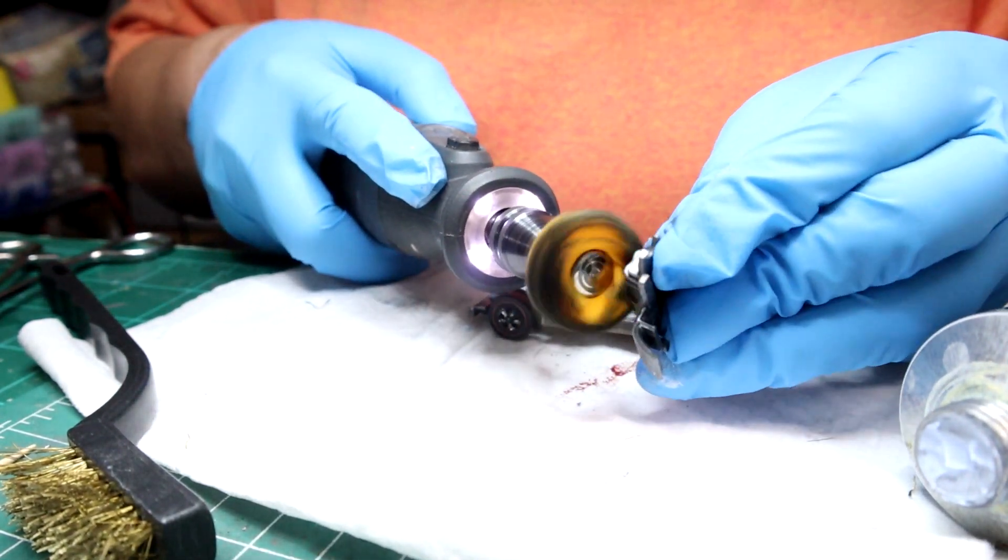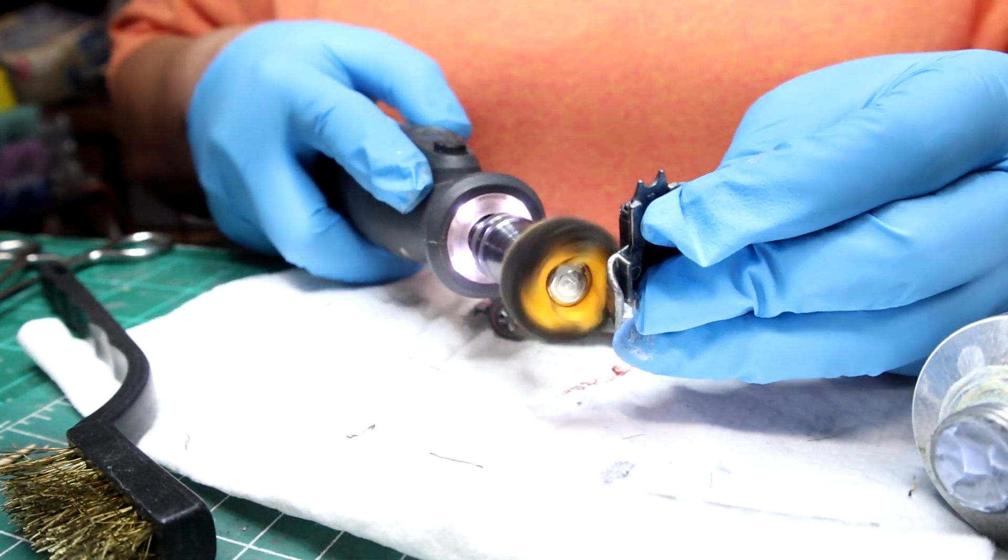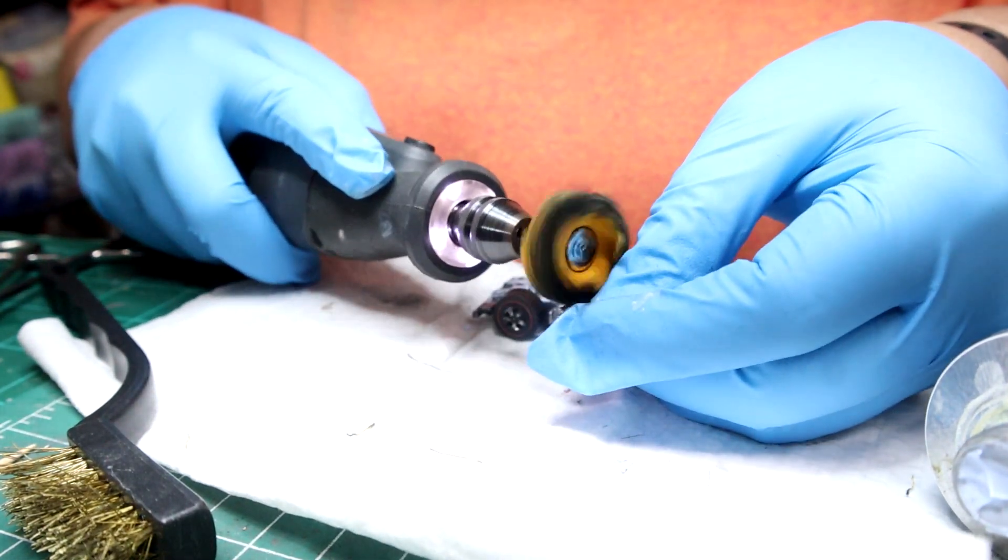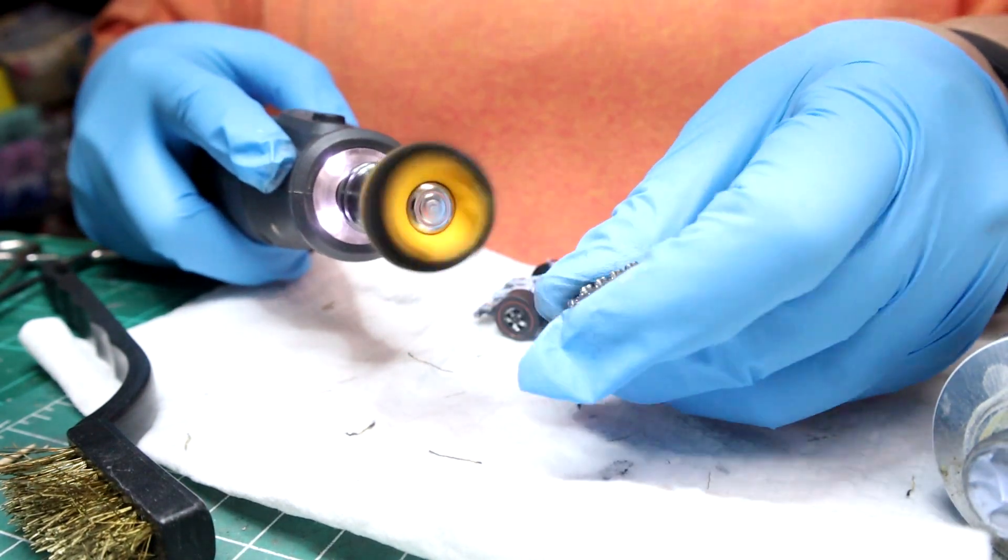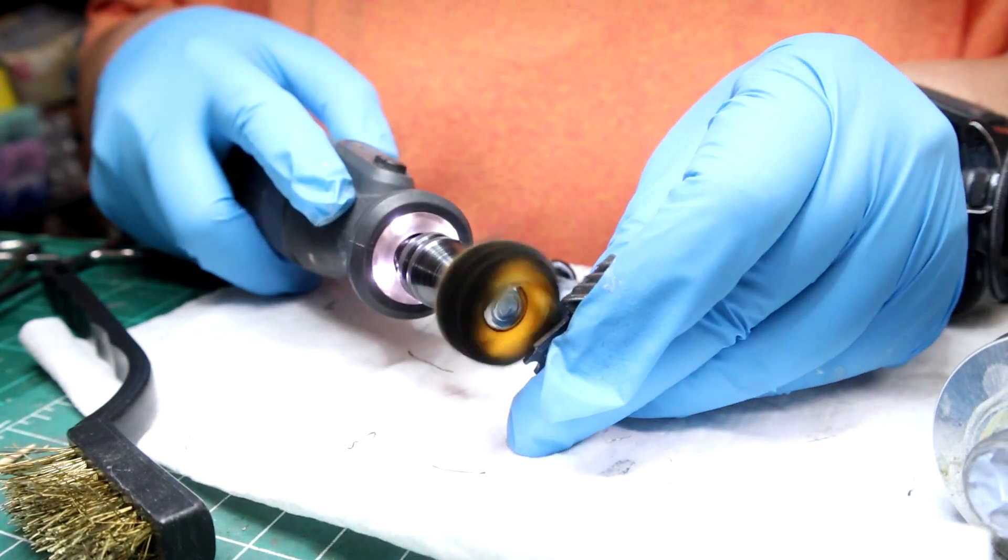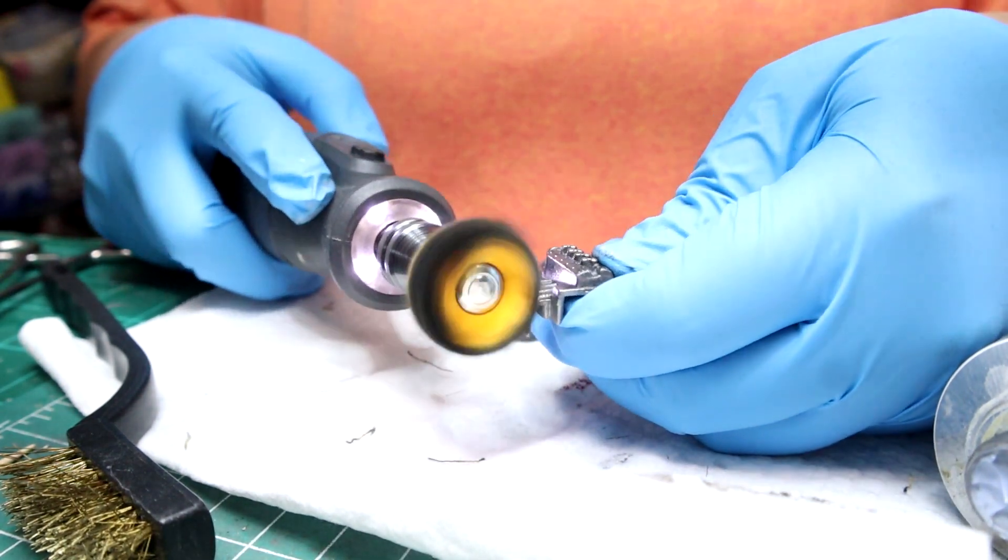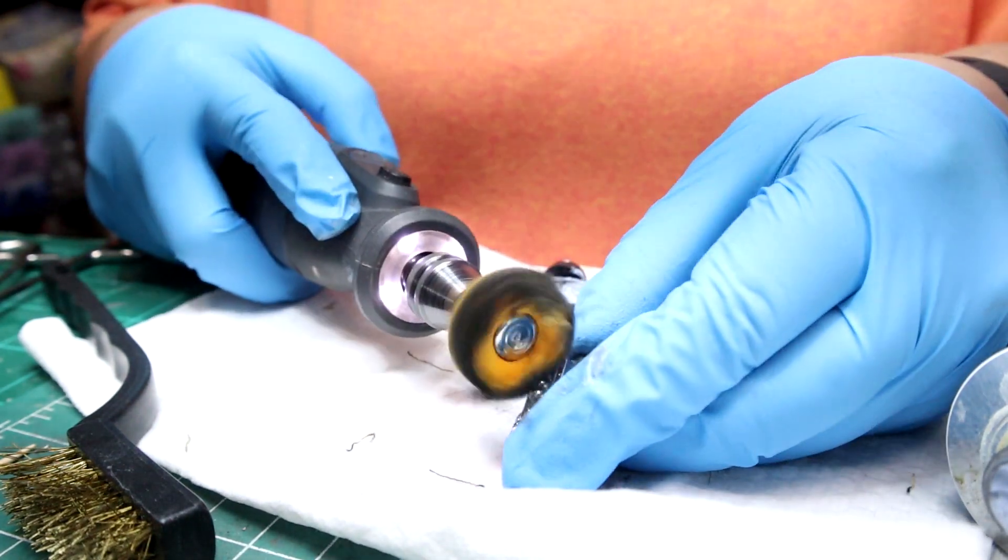Again, even at this slow speed, hold on to that thing because it might get away from you, just with the revolutions from the little cotton wheel. You can see it turning black there. If I didn't have those gloves on, my fingers would be the same color. There, I lost it.